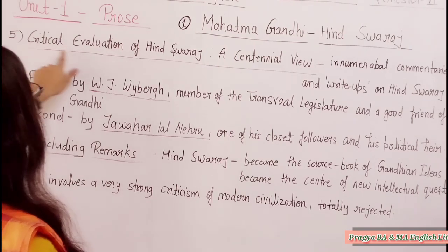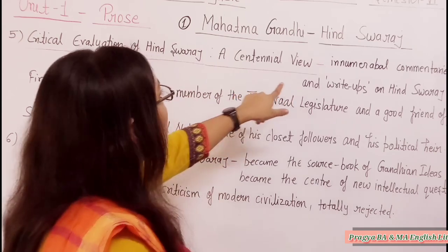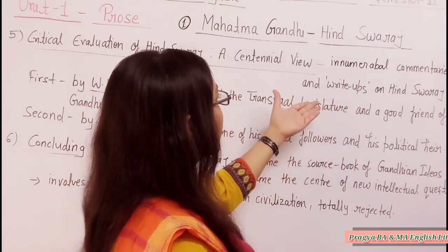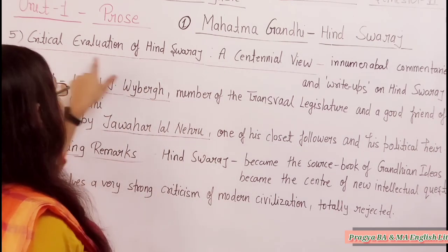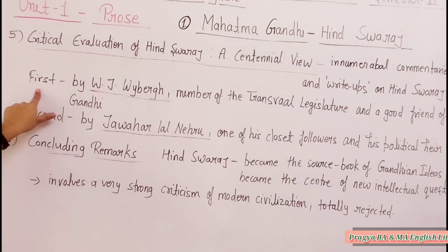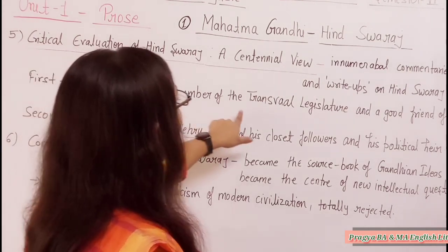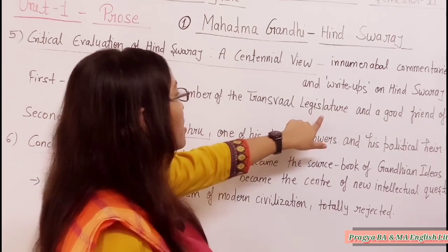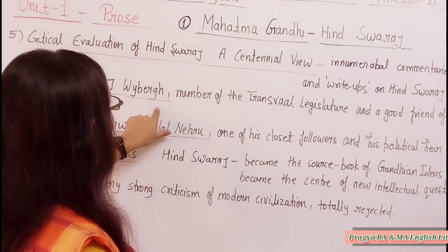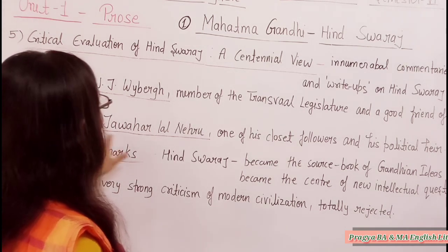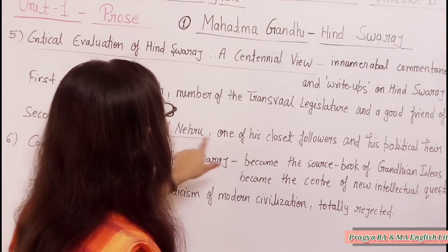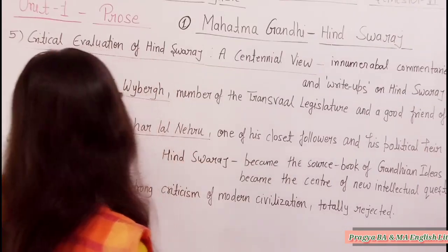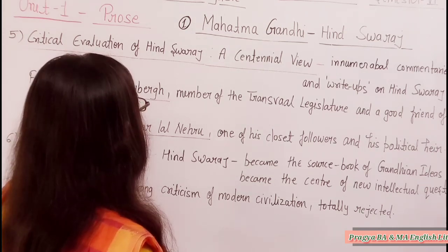Number 5 is the critical evaluation of Hind Swaraj — a centennial view. There are innumerable commentaries and writings on Hind Swaraj. First commentary is by W.J. Weiberg, who was a member of the Transvaal Legislature and a good friend of Gandhiji. Second commentary is by Jawaharlal Nehru — he was one of Gandhi's closest followers and his political heir. These are the two major commentaries written on Hind Swaraj.